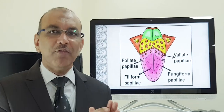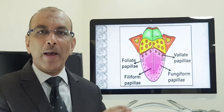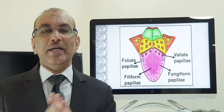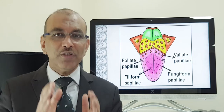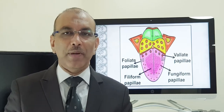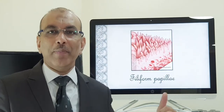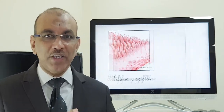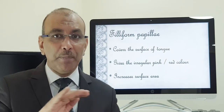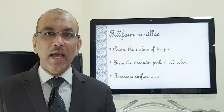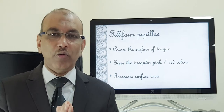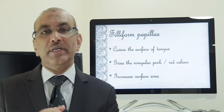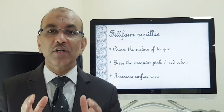Except for the filiform papillae, all other papillae have taste buds. Filiform papillae do not have a taste bud. So what are the functions of filiform papillae? These hair-like structures give a velvety pattern to the tongue and a velvety colour. They also increase the surface area and give a roughness to the tongue. These are the functions of the filiform papillae.